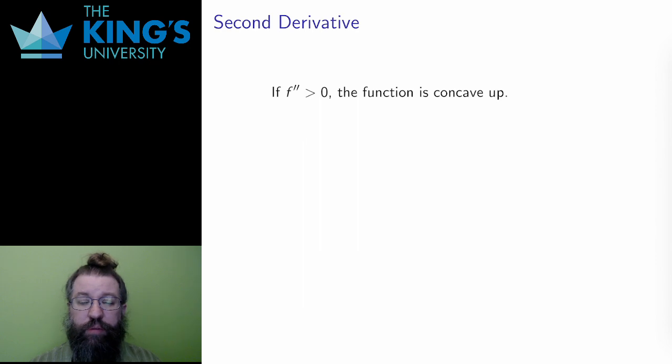I can do the same kind of thing for the second derivative. If increase and decrease is what the first derivative means, what does the second derivative mean? Well, the second derivative is the rate of change of the first derivative. And the first derivative measures slope. Therefore, the second derivative is the rate of change of the slope.